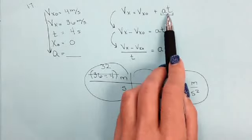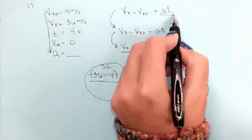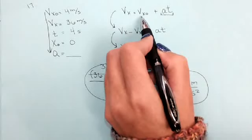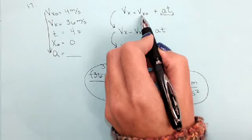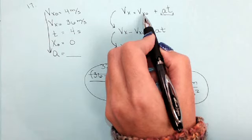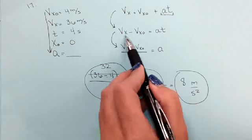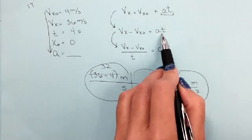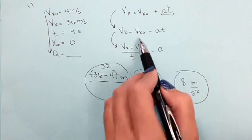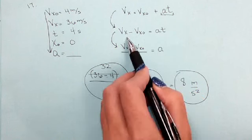To get A by itself, I first want to get this whole segment by itself. To do that, I subtracted Vx0 from both sides. This is just like math, solving for X. I subtracted Vx0 from both sides, and then it looked like this. Then I divided both sides by T. If I divide this side by T, it's gone. If I divide this side by T, it's still there.